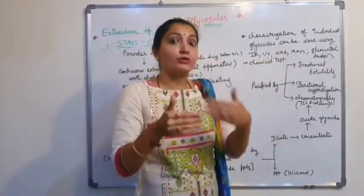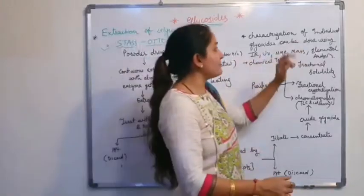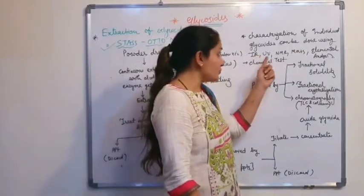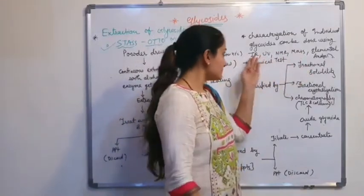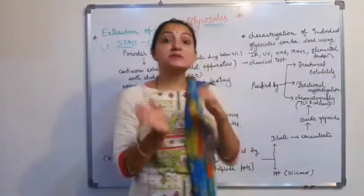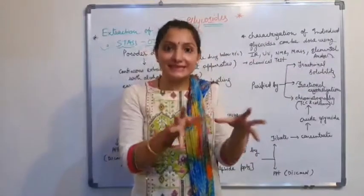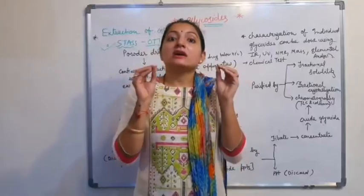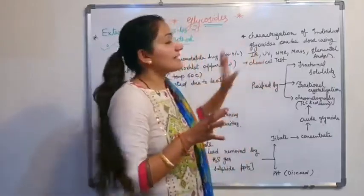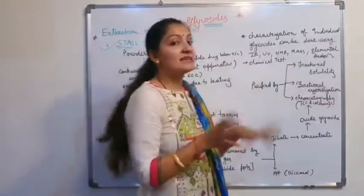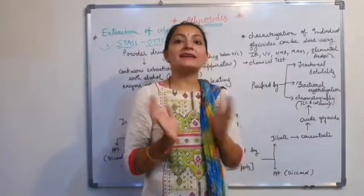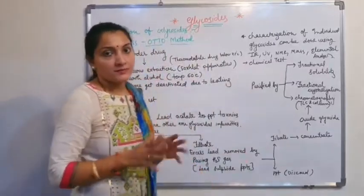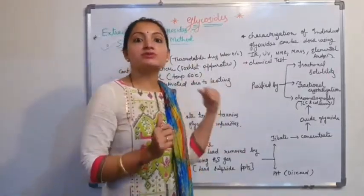IR, UV, NMR, mass spectrometry, and elemental analysis. By these characterization methods and chemical tests, we can easily identify which type of glycoside is present in the crude material. This is the extraction method and it is most important.